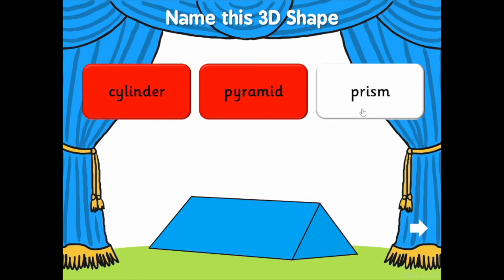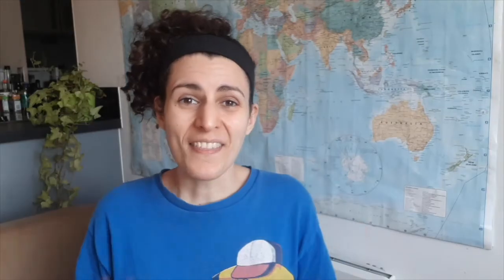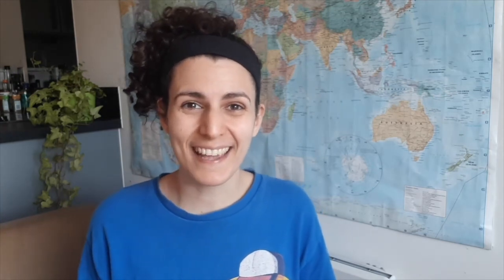This is a fun activity to try when kids are first learning about 3D shapes, so you can revisit it later and they can see how far they've come. And that's our 3D Shapes PowerPoint. If you'd like to use this resource at home or in the classroom, it's available to be downloaded from the Twinkle website. Have a lovely day.